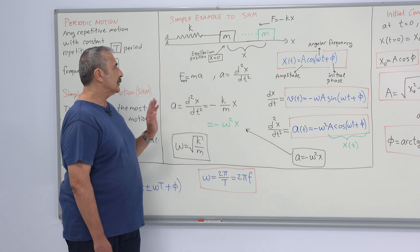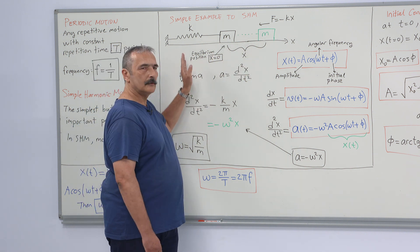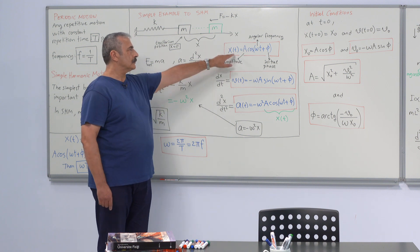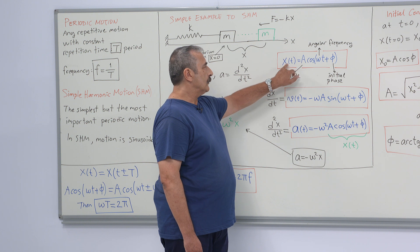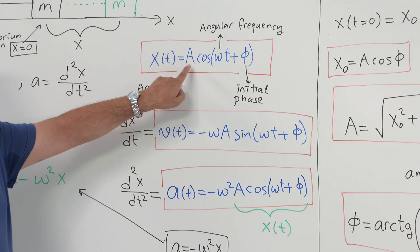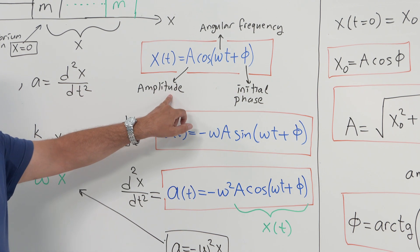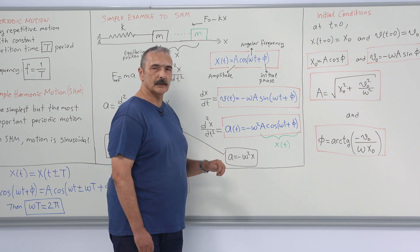This is a sinusoidal motion. It moves back and forth to a maximum displacement of A. This is the solution of this differential equation. Time dependency of the displacement is A times cosine omega t plus phi.